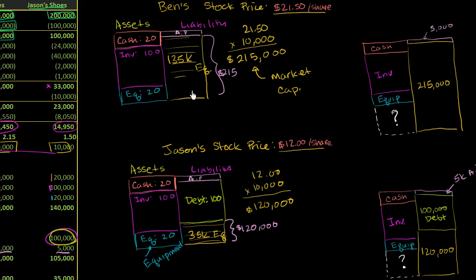Even though the book value of the equity was $135,000. What I want to do in this video is think about what does that mean, or how should we perceive the market's value of the assets of Ben's shoe company, and then we can also think about Jason's shoe company.